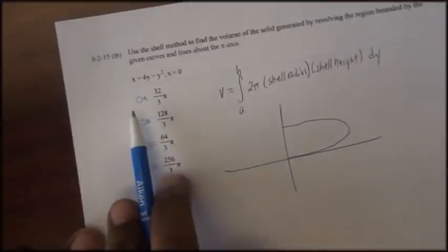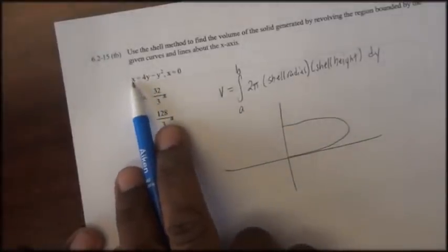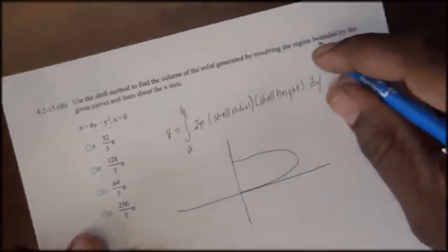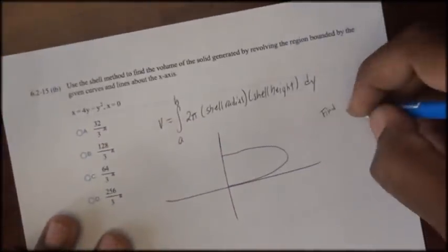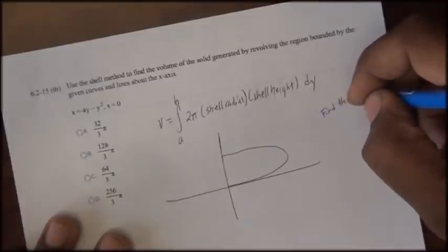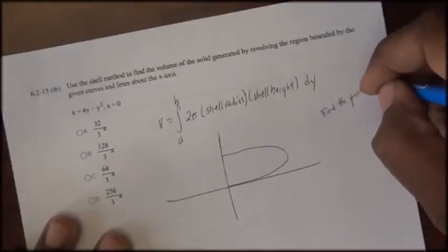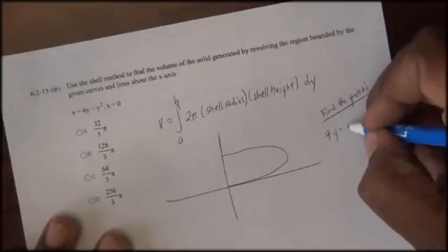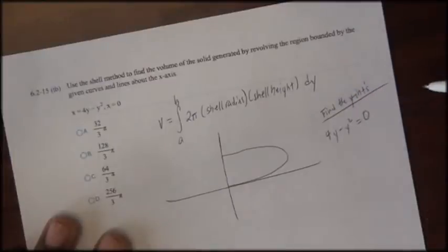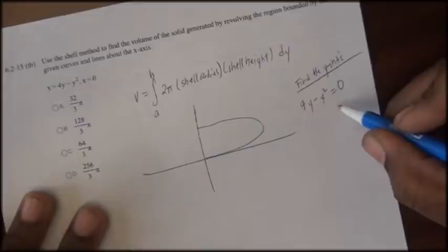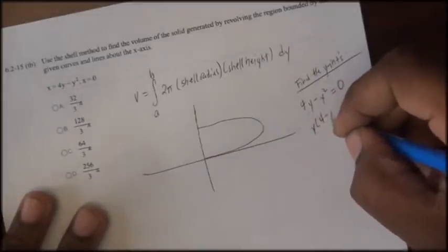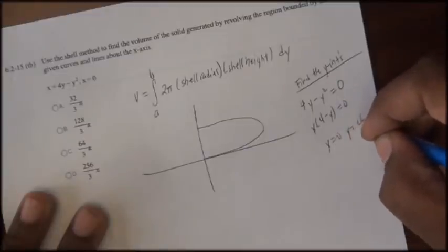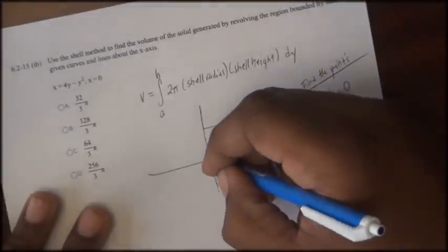And remember, from algebra, to find the y-intercepts, you'll simply take your function, set x equal to 0, and solve for y. So here I'll find the y-intercepts, so I'll take the function 4y minus y squared, set that equal to 0, and solve for y. I'll simply factor out a y. So y equals 0, and y equals 4.